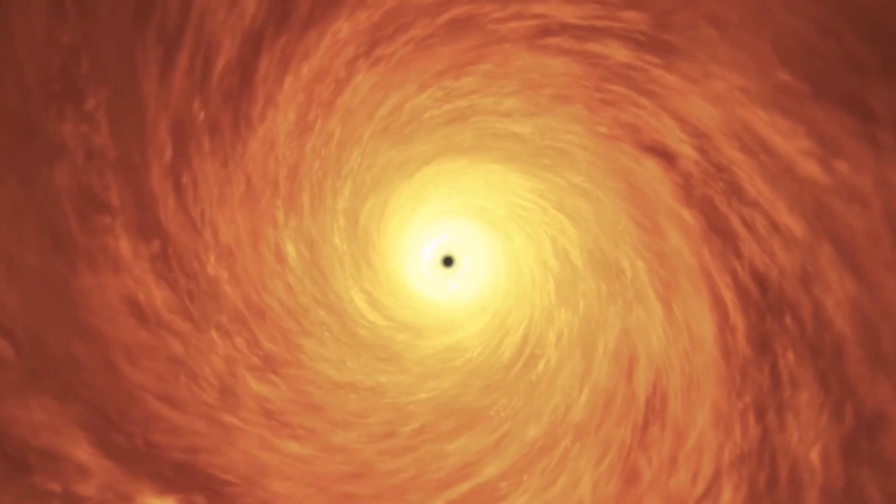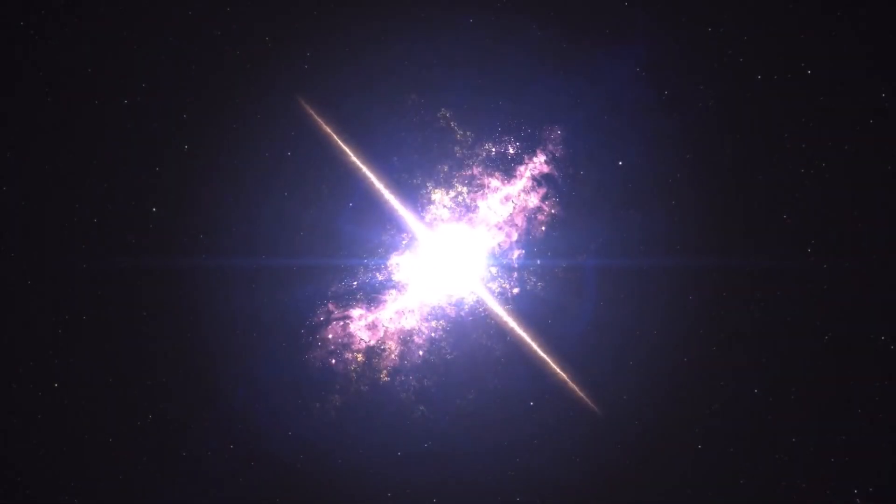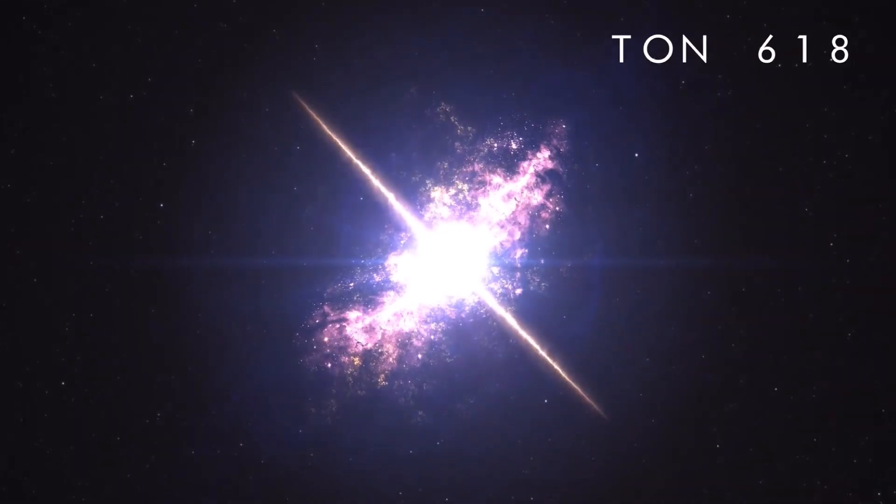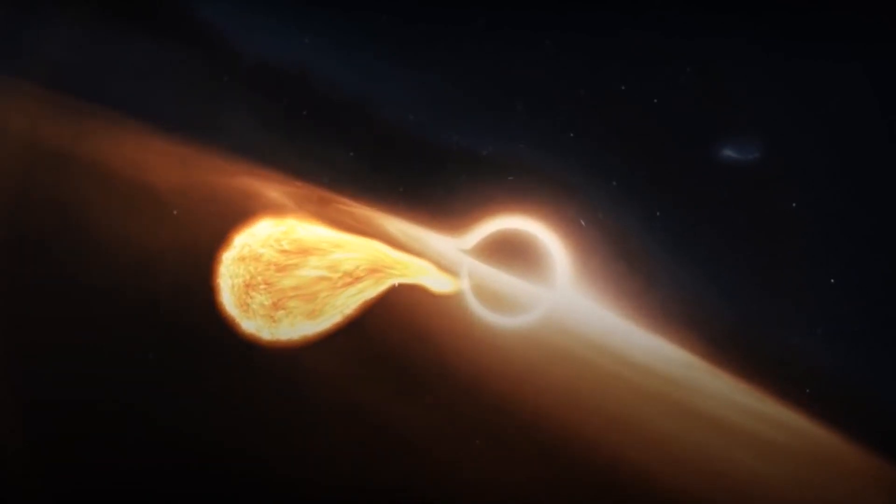However, none of these black holes are a match for the ultimately powerful black hole at the center of the quasar TON 618. It weighs 66 billion solar masses, making it the most powerful black hole discovered yet.